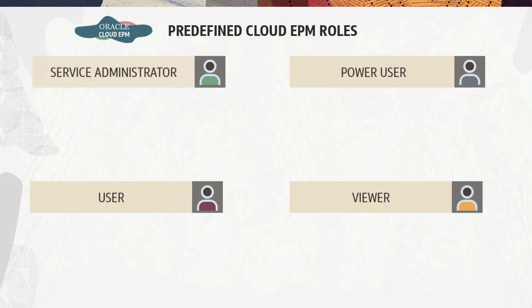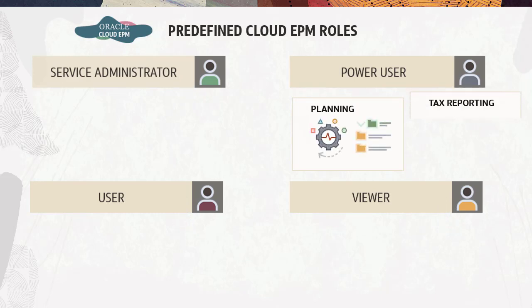The access that a predefined role grants within an environment depends on the service type. For example, the Power User role in Planning enables you to manage business role security and control the approval process, while the same role in Tax Reporting enables you to run tax automation and import data.